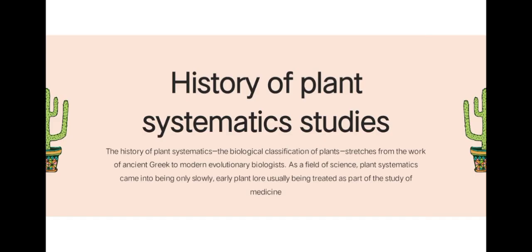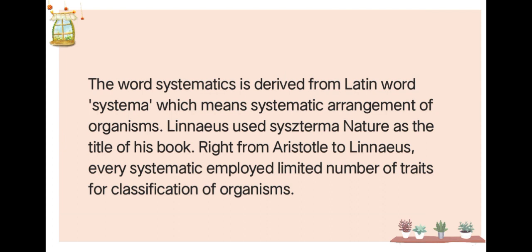The history of plant systematic studies spans from the work of ancient Greeks to modern evolutionary biologists. As a field of science, plant systematics came into being only slowly, with early plant studies usually treated as part of medicine. The word 'systematics' is derived from the Latin word 'systema,' meaning systematic arrangement of organisms, as used by Linnaeus in his book Systema Naturae. From Aristotle to Linnaeus, every systematist employed a limited number of traits for classification of organisms.